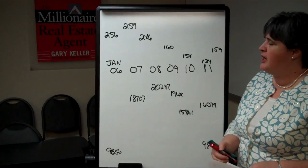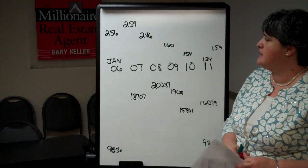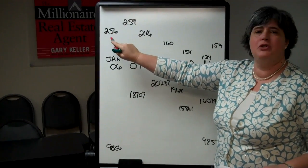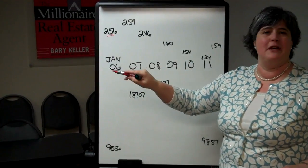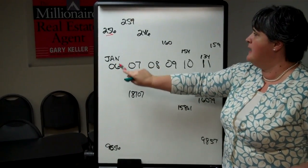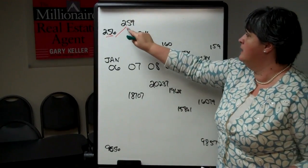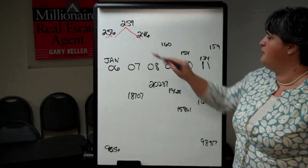If we go back to January of 2006, we see that our average sale price was $256,000. Well, wouldn't we love those days to come back again? Then in 2007, it went up to $259,000, and then down to $246,000.